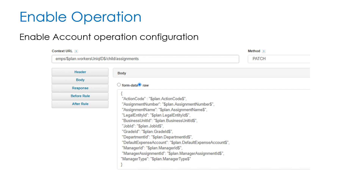The next operation is the enable operation. This operation is used to enable an account in Oracle Fusion. As part of the context URL, we will be passing the worker's unique ID of the account to be enabled. The HTTP method we will be using is PATCH. As part of the request body, we will be passing attributes such as action code, assignment number, assignment name, legal entity ID, business unit ID, job ID, grade ID, department ID, default expense account, manager ID, manager assignment ID, and manager type.